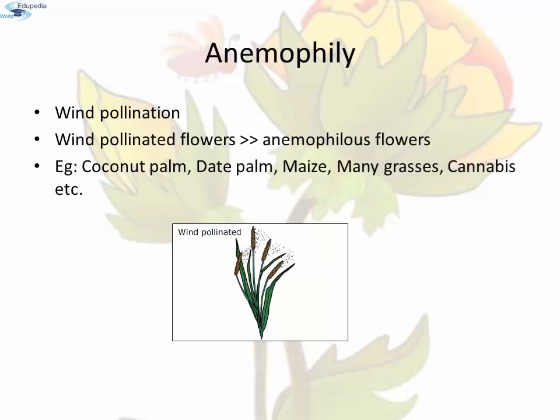Anemophily: Pollination by the agency of wind is called anemophily or wind pollination. The wind-pollinated flowers are called anemophilous flowers. For example, coconut palm, date palm, maize, different varieties of grasses, cannabis, etc.